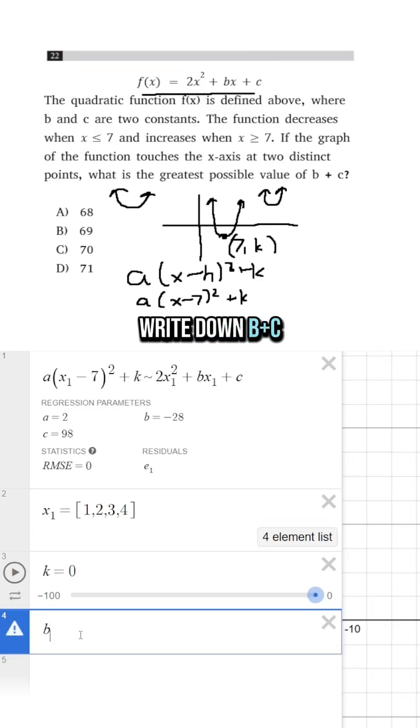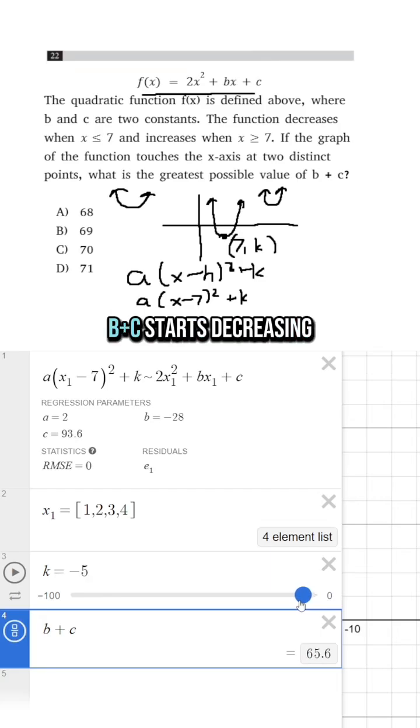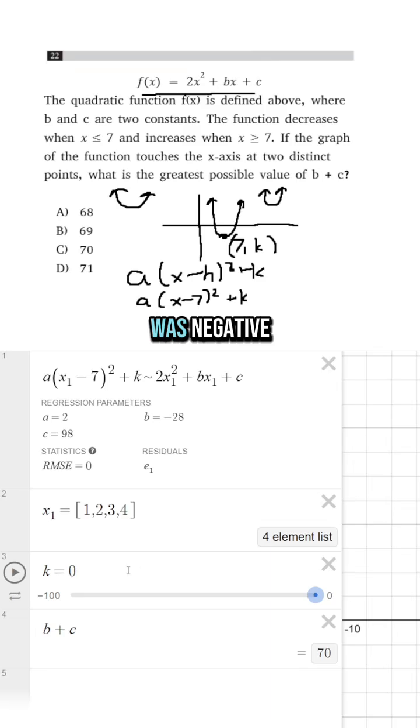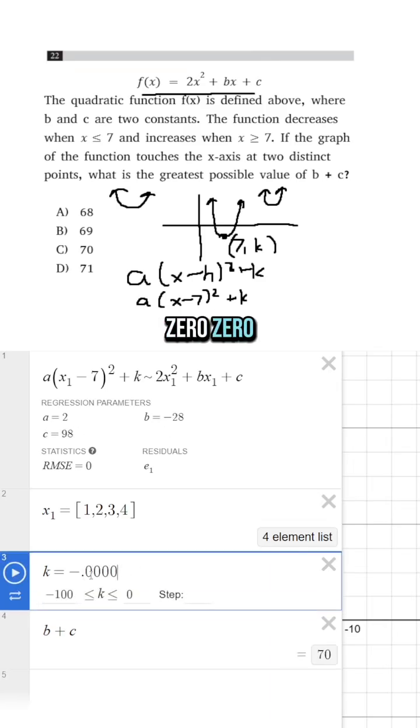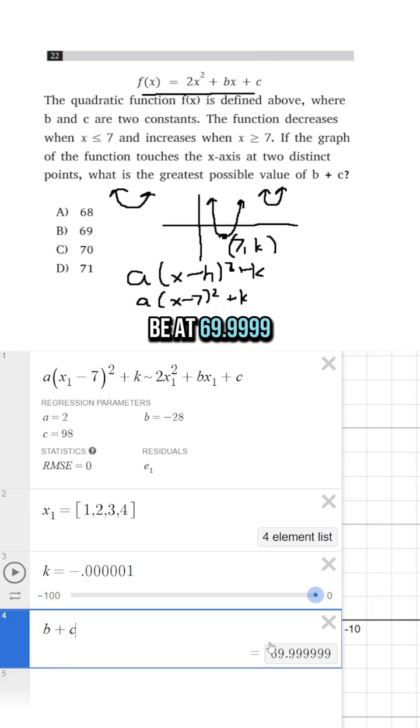Now if I write down b plus c, let's look at what happens as I move k less and less. If k was equal to 0, b plus c would be 70. And the second I start moving it down, b plus c starts decreasing. So if k was negative, for example, 0.0001, we'd be at 69.9999.